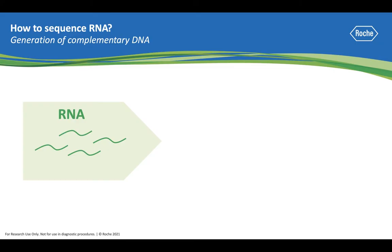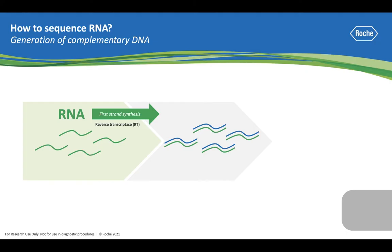RNA can be isolated readily from biological samples. However, to prepare RNA for sequencing, it first must be converted into double-stranded DNA molecules that can serve as a template for DNA polymerases during NGS library preparation. These DNA copies are called complementary DNA, or cDNA.